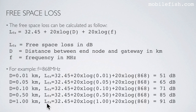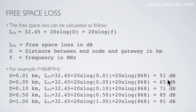Here are some calculations using the 868 MHz frequency, at distances of 10 meters, 15 meters, 100 meters, 500 meters, and 1 kilometer, with the corresponding free space loss values shown. In a later video, you will see that free space loss is the biggest loss in a radio communication system.